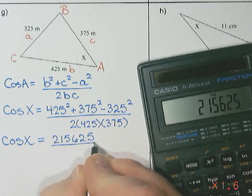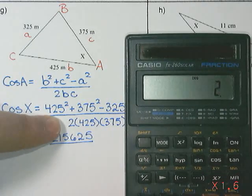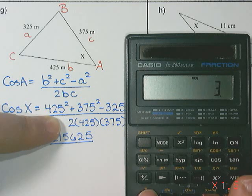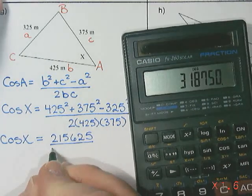Sometimes that number is negative. All right, on the bottom, we have 2 times 425, times 375, and I get 318,750.